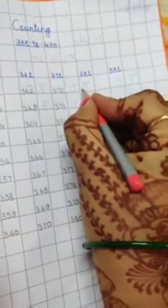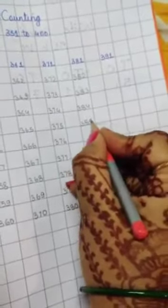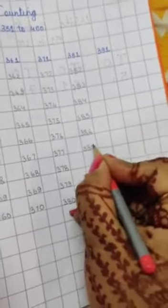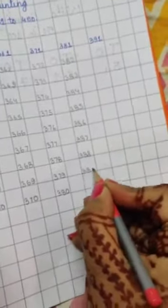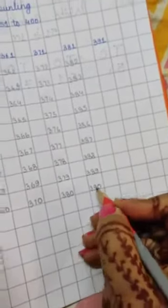381. After that, 382, 383, 384, 385, 386, 387, 388, 389 and 390.